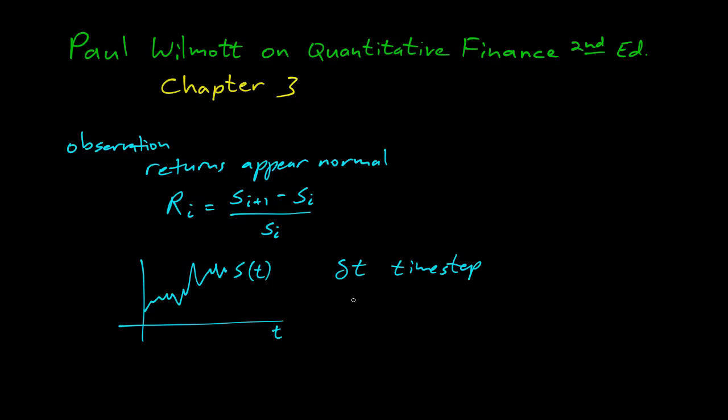Once we have all those measurements, we can calculate some mean. So mu will be our mean return. And sigma will be our standard deviation of the returns. And so that works pretty well. For every given time step, we can get the mean and standard deviation of the returns.